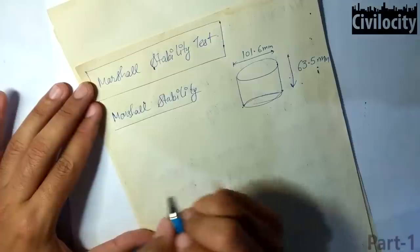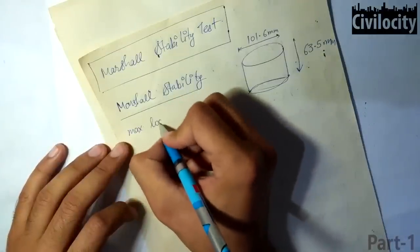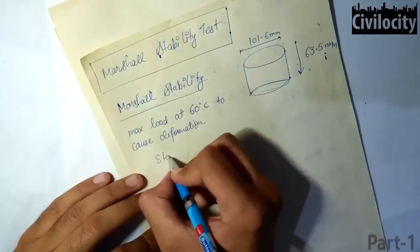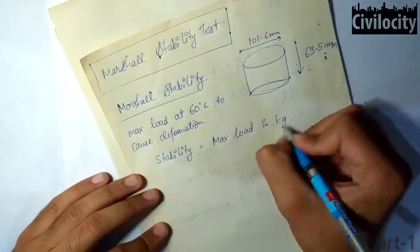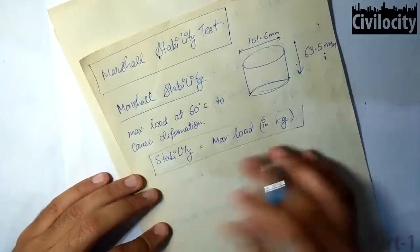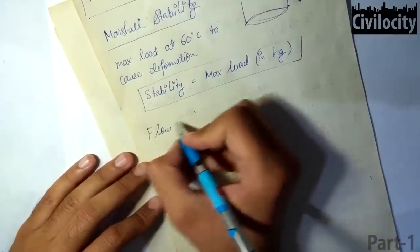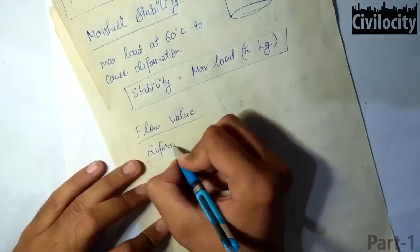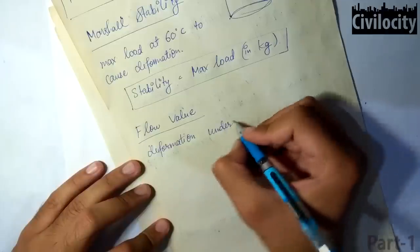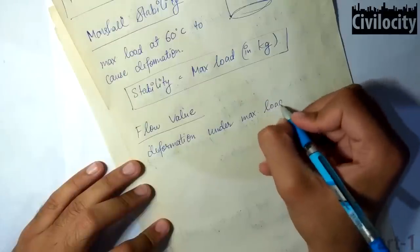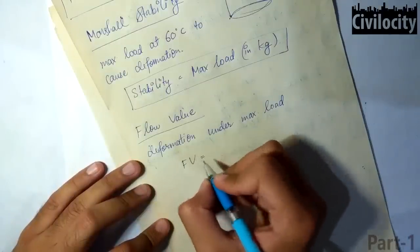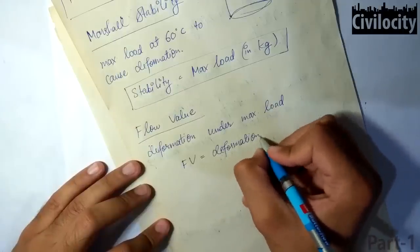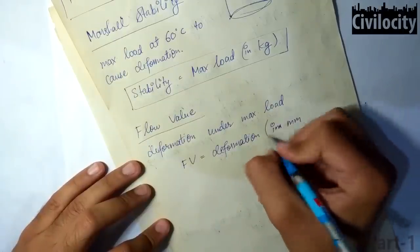What is Marshall Stability? Marshall Stability value is the maximum load at 60 degree Celsius to cause deformation. It is measured in kgs. So, stability is equal to the maximum load in kgs. Whereas, the second most important term in this Marshall Stability Test is the flow value. What is the flow value? The total deformation the Marshall Test specimen undergoes at the maximum load is called as flow value. And it is expressed in mm. These are the two main terms: the Marshall Stability and the Marshall Flow Value.